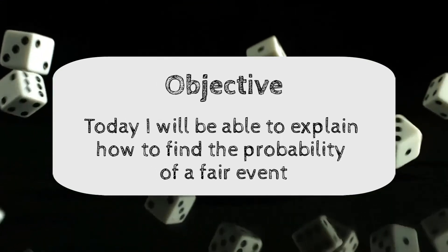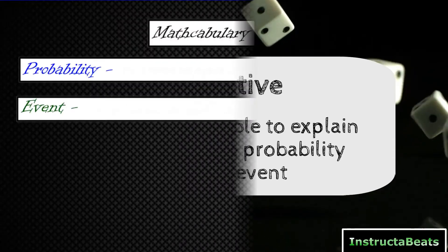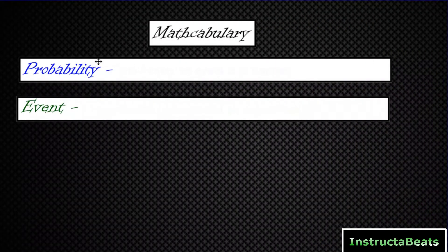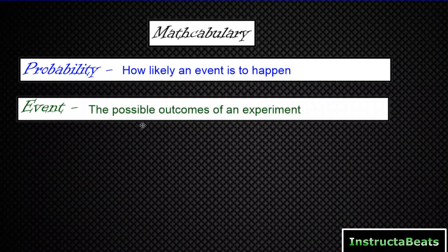Before we get started, we need to take a look at our mathcabulary for this lesson. We have two mathcabulary words. The first one is probability. What does it mean when we're talking about probability? Probability is how likely an event is to happen — it's using math to look at an experiment and tell us how likely an event is to happen. An event is the possible outcomes of an experiment.